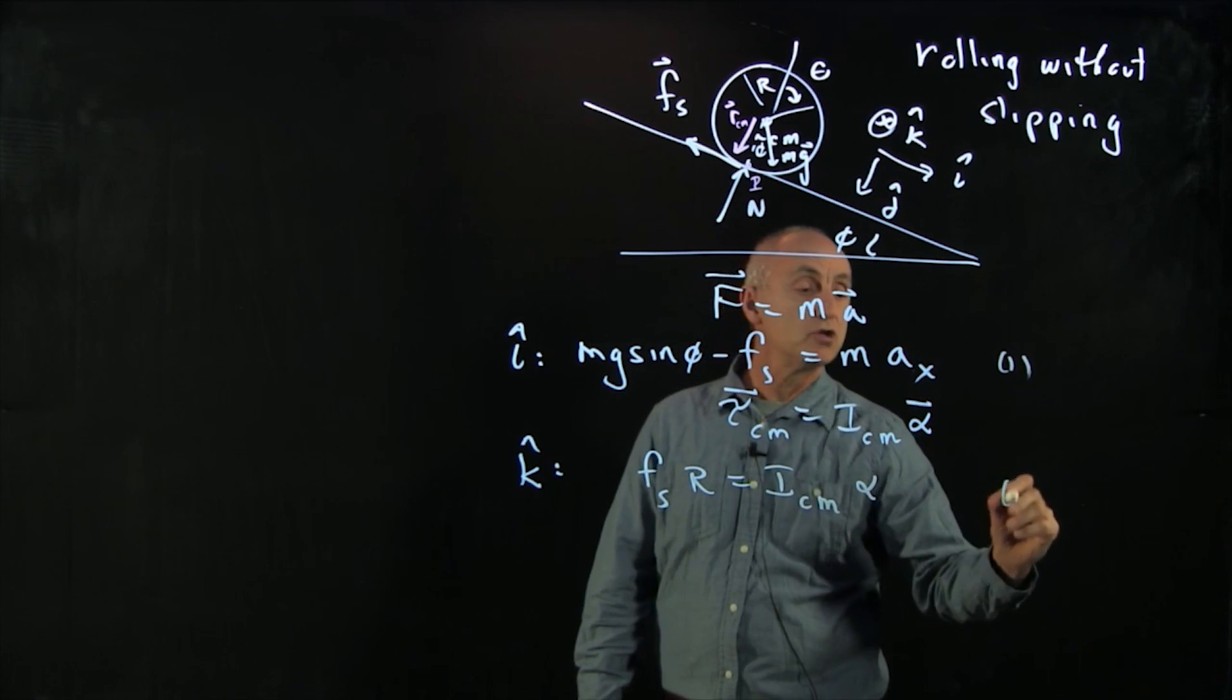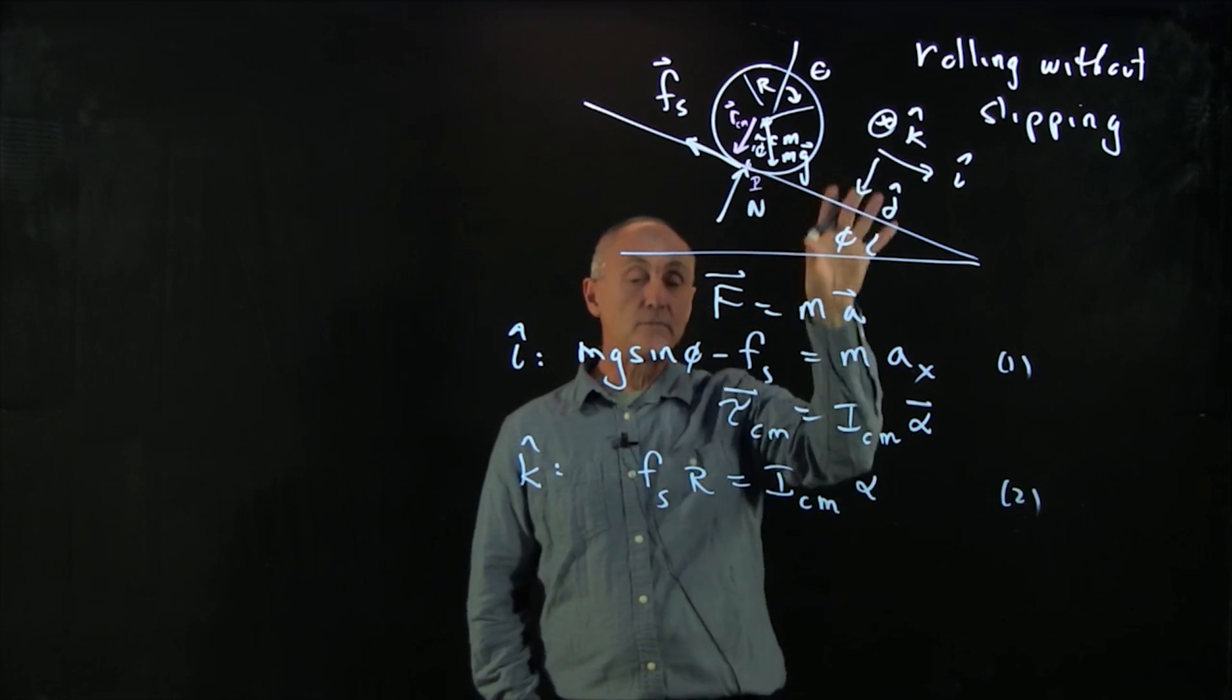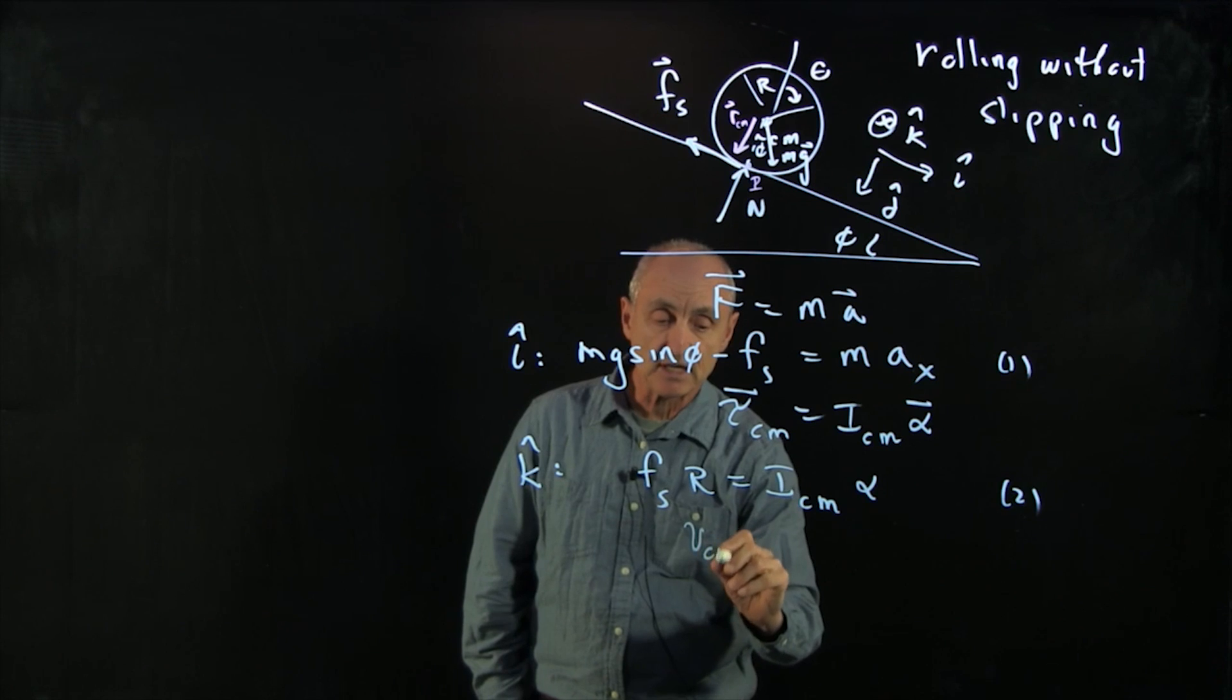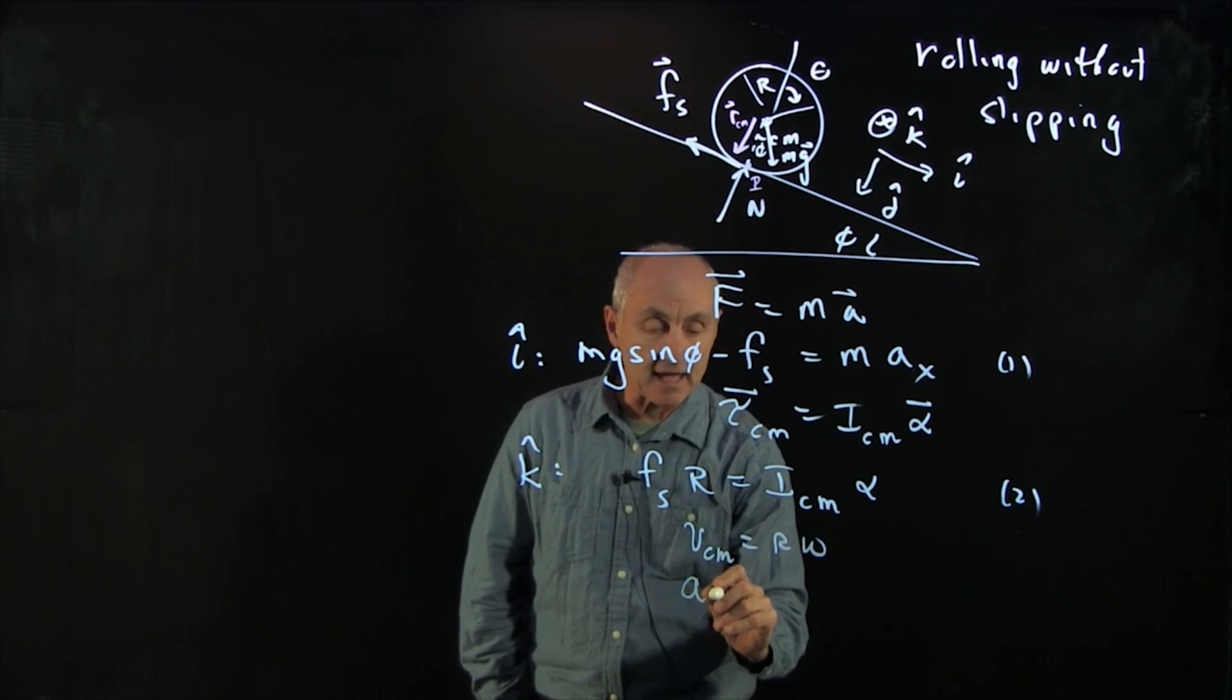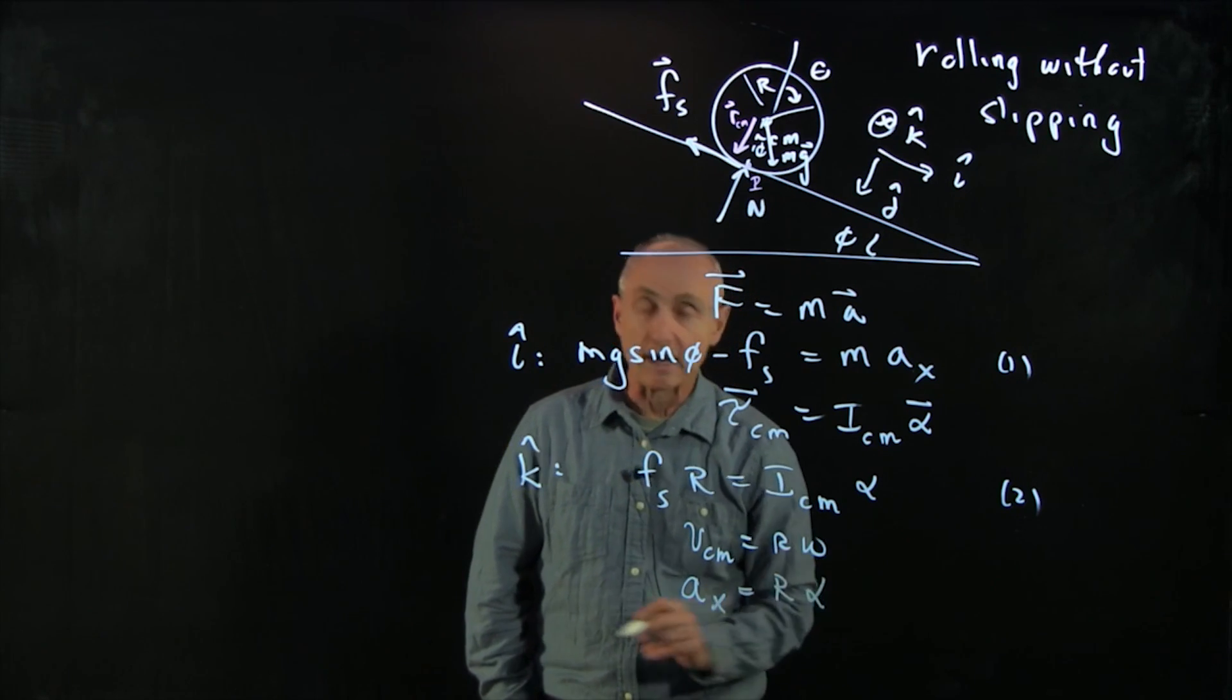And these are our two dynamic equations. But remember, when the object is rolling without slipping, let's just remind ourselves that v cm equals r omega. And if I differentiate, the acm, which is what we're calling ax, is equal to r alpha.